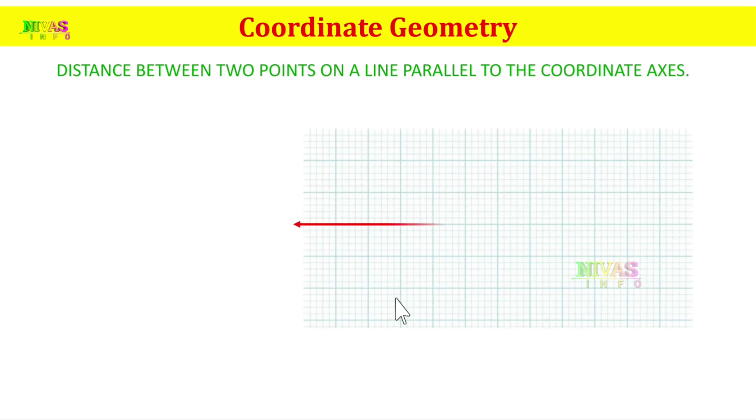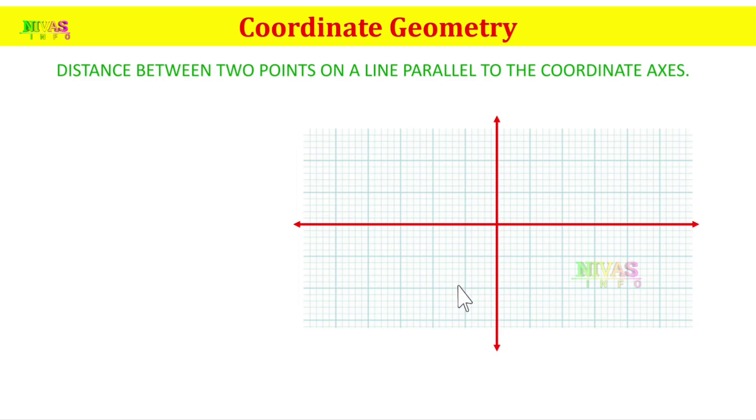This is the distance between two points on a line parallel to the coordinate axis. Here, I take graph paper with an x-axis and y-axis. I will take the problem here: (-2, 0) and (-6, 0).